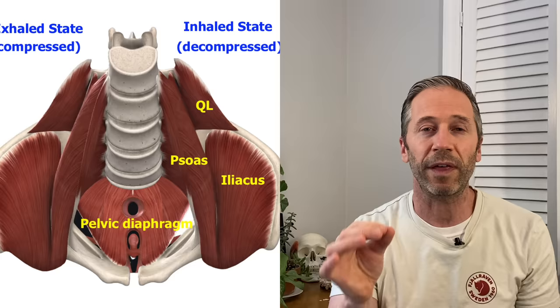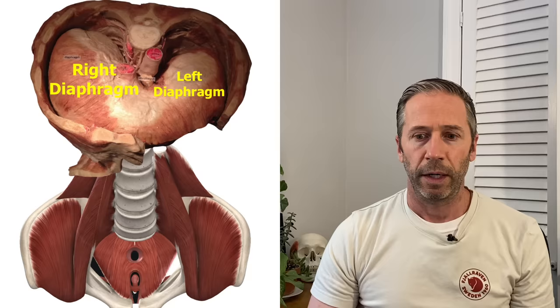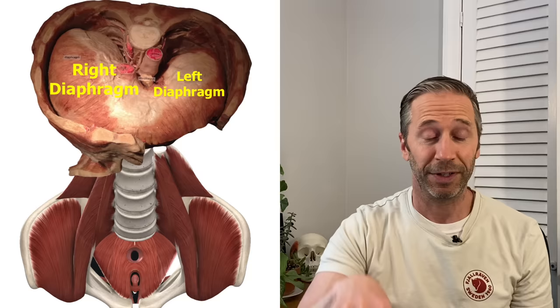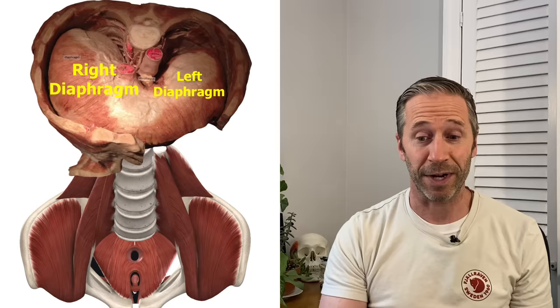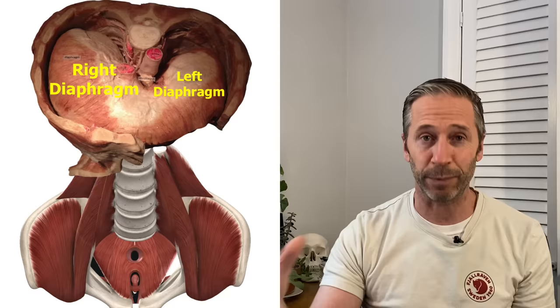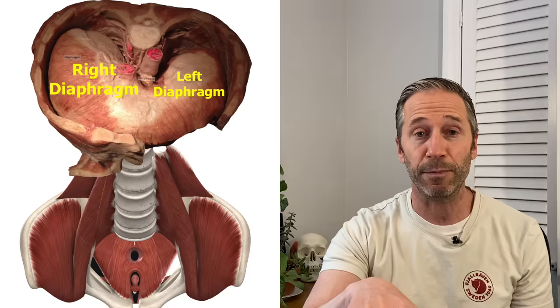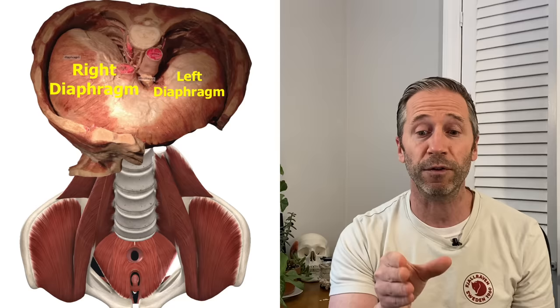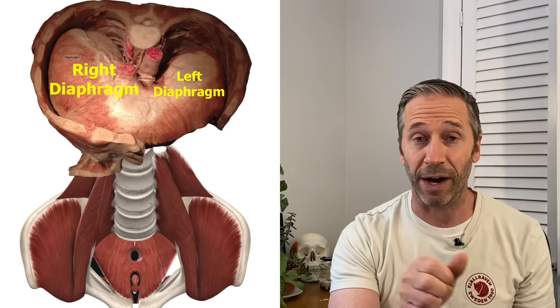But there is a bigger picture that people are still missing. Here I've placed a picture of the right diaphragm and the left diaphragm on top of the QL, psoas, iliacus, and pelvic floor area. You'll notice that the right diaphragm and the left diaphragm are not the same size — this is the big picture. Because of that bigger right diaphragm, the muscular forces acting upon the lumbar spine — where the QL and the psoas attach — are not equal on both sides. There are greater forces coming from the right diaphragm on the lumbar spine than on the left side.